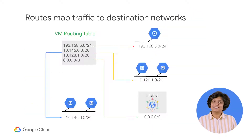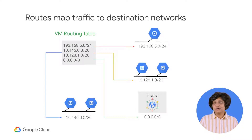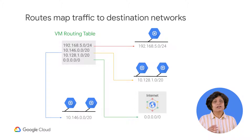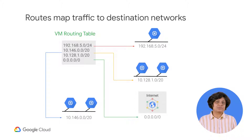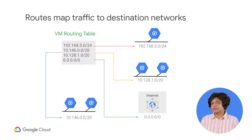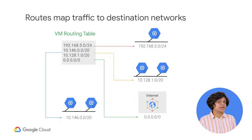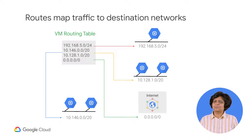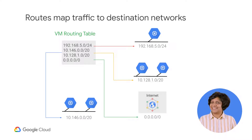Routes match packets by destination IP addresses. However, no traffic will flow without also matching a firewall rule. A route is created when a network is created, enabling traffic delivery from anywhere. Also, a route is created when a subnet is created. This is what enables VMs on the same network to communicate. This diagram shows a simplified routing table, but you will look at this in more detail next.